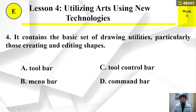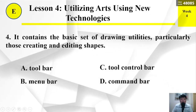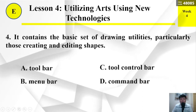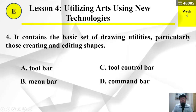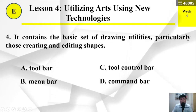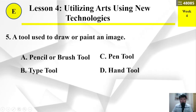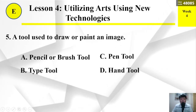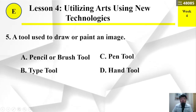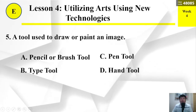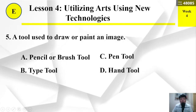Number 3 or 4: It contains the basic set of drawing utilities, particularly those for creating and editing shapes. A. Toolbar, B. Menu bar, C. Tool control bar, D. Command bar. Number 5: A tool used to draw or paint an image. A. Pencil or brush tool, B. Type tool, C. Pen tool, D. Hand tool.